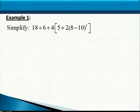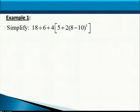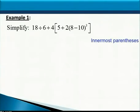Let's look at an example that has a little bit of everything. Notice that we have parentheses and brackets, an exponent, some multiplication and division, and some addition and subtraction. So let's go through the order of operations to simplify this expression down to a single number. We need to perform the innermost grouping symbols first — that would be the parentheses on the inside.